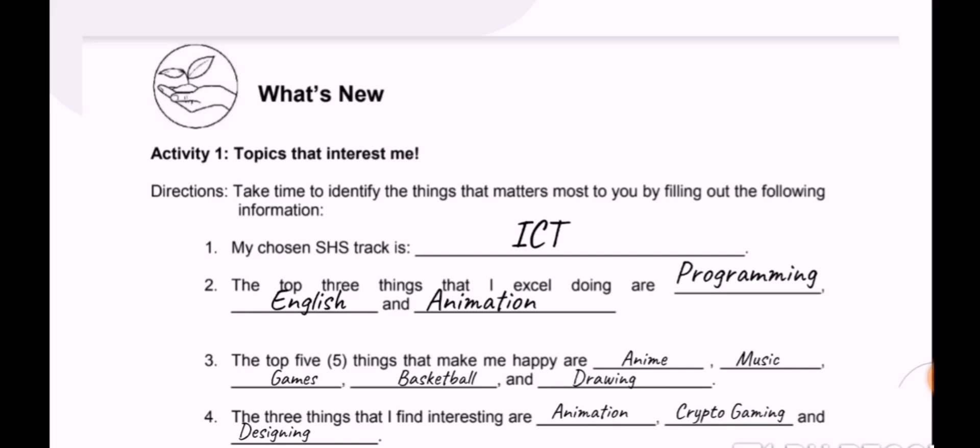It could be anything, but this example serves those three things that the person likes and excels at. The top five things that make the person happy would be anime, which is common among young people. I, even at my age, still watch a couple of animations, and music.